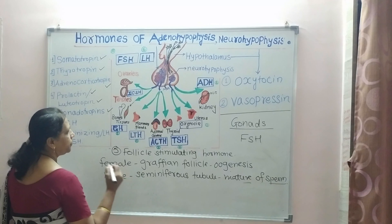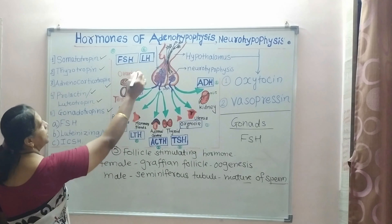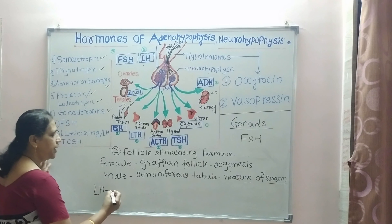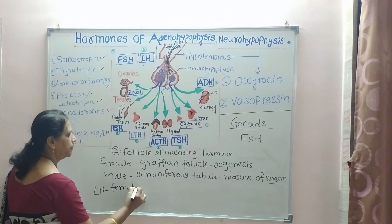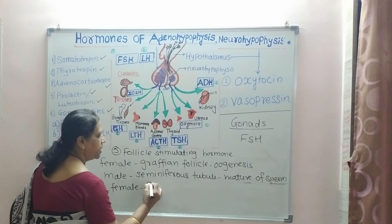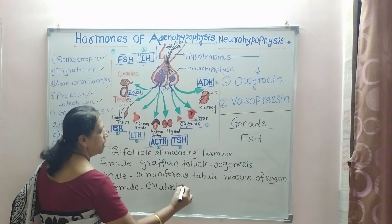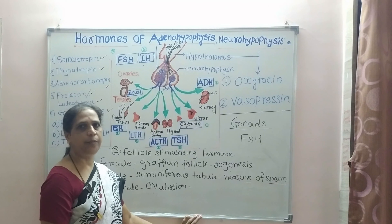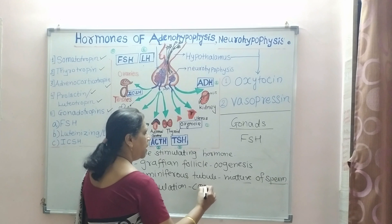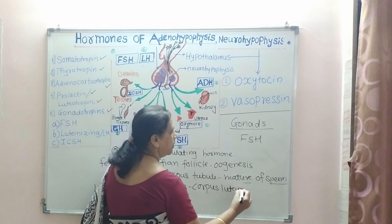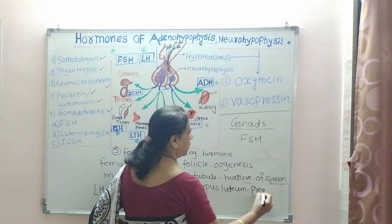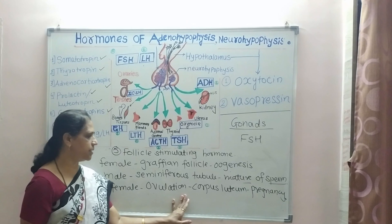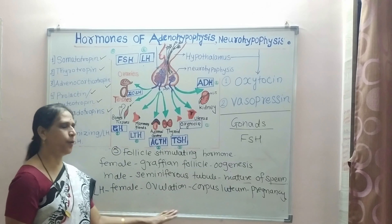The second gonadotropin is LH — luteinizing hormone. In females, LH causes ovulation, that is, release of the egg from the mature Graafian follicle, resulting in formation of the corpus luteum, which in turn maintains pregnancy. So LH in females causes ovulation and formation of the corpus luteum.